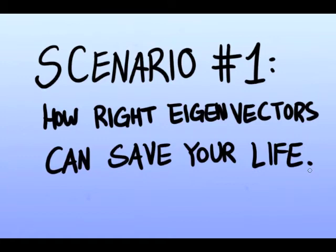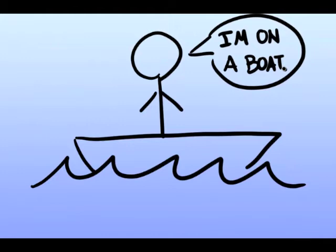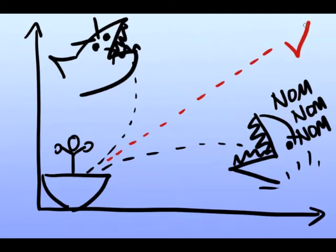And now for two applications of right and left eigenvectors. Consider our friend Bob who is on a boat surrounded by hungry sharks. These are strange sharks who will only attack Bob if his boat turns. So as long as Bob travels in a straight line, he will be safe.